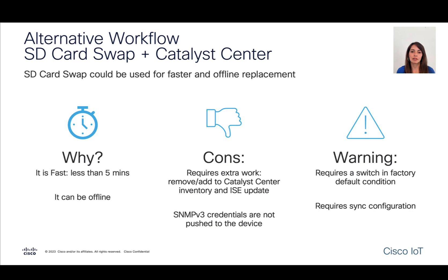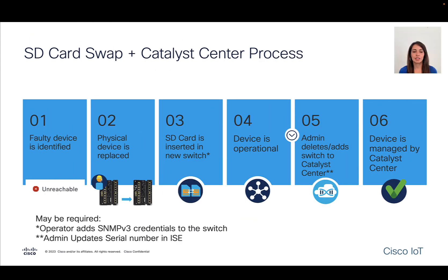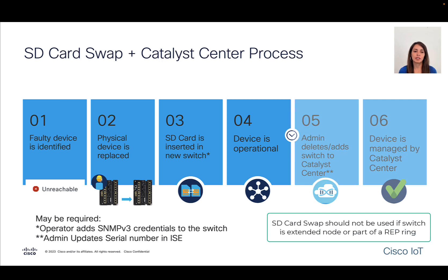Nevertheless, in some cases, replacement needs to happen faster or offline. In that case, if SD card swap is used, an operator will need to go into Catalyst Center, remove the previous device, and add the new one. In this alternative workflow, the device is identified as failed, physically replaced, and the SD card is inserted into the switch. At that point, the device becomes operational. Then an administrator can delete and add the device into Catalyst Center and perform other tasks, such as configuring SNMP version 3 credentials into the switch and updating ICE.